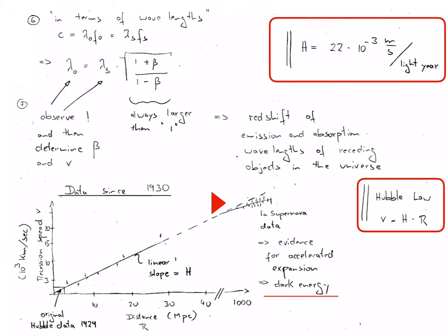His original dataset extended only a few megaparsecs into the cosmos. Since then many more such measurements have been performed and an illustration of the results is given in the diagram at the bottom left. Plotted here is the measured recession speed, V, of the star or galaxy as a function of the distance that can be determined independently.